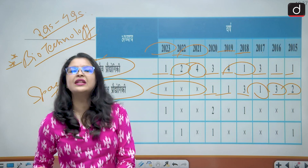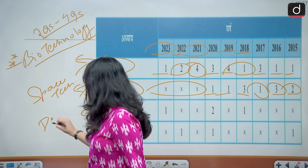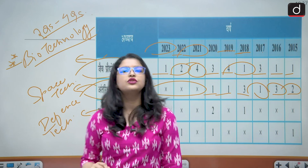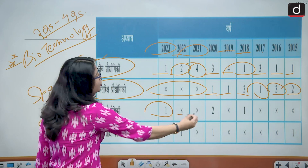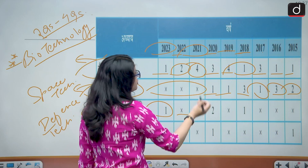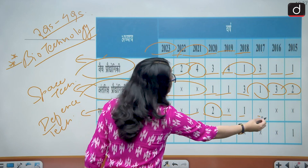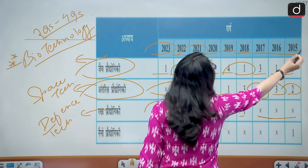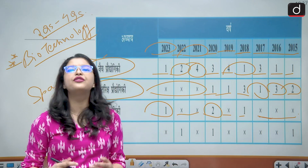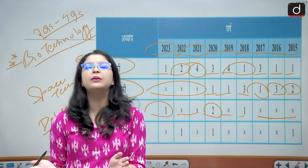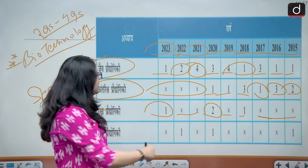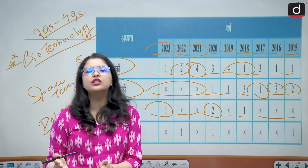Talking about defense technology: in 2023 one question was asked, and no questions were asked in 2022 and 2021. In 2020, two questions were asked, then no question, one question, and none in 2017, 2016, and 2015. You can see a difference in trend here, and that is why people say the paper has suddenly become difficult. But the trend is not changing — they are simply repeating those topics which they do not ask frequently.